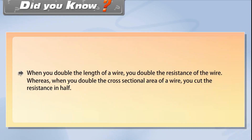Did you know? When you double the length of a wire, you double the resistance of the wire. Whereas, when you double the cross-sectional area of a wire, you cut the resistance in half.